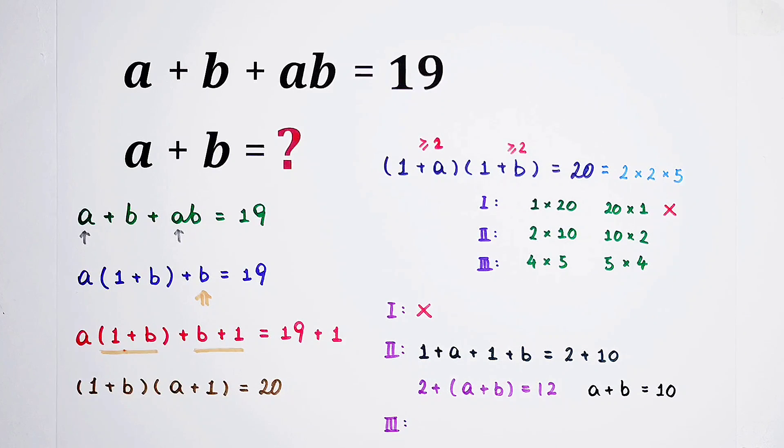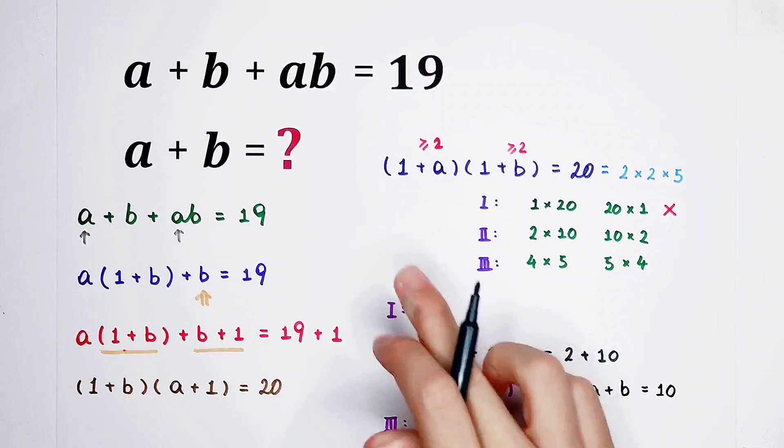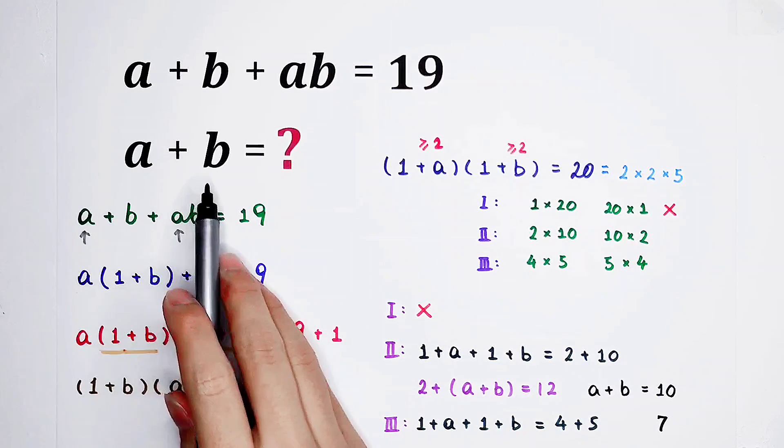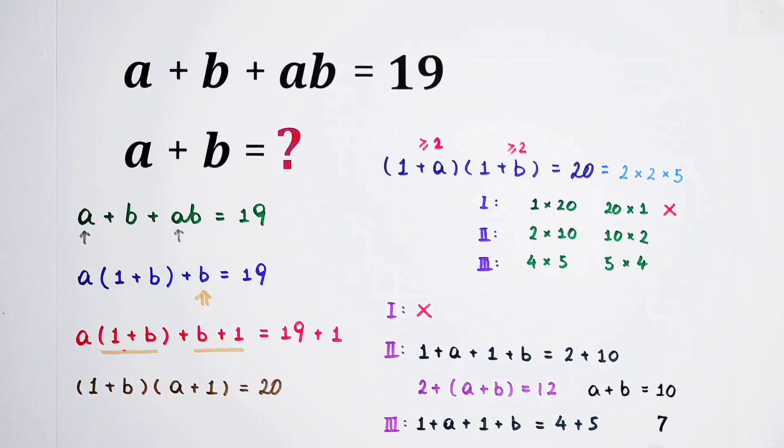For our third case as well, 1 plus A plus 1 plus B, it is 4 plus 5. 2 plus A plus B is 9. So, A plus B is 9 minus 2, which is equal to 7. So, A plus B is 7 in this case. The value of A plus B is 10 or 7.